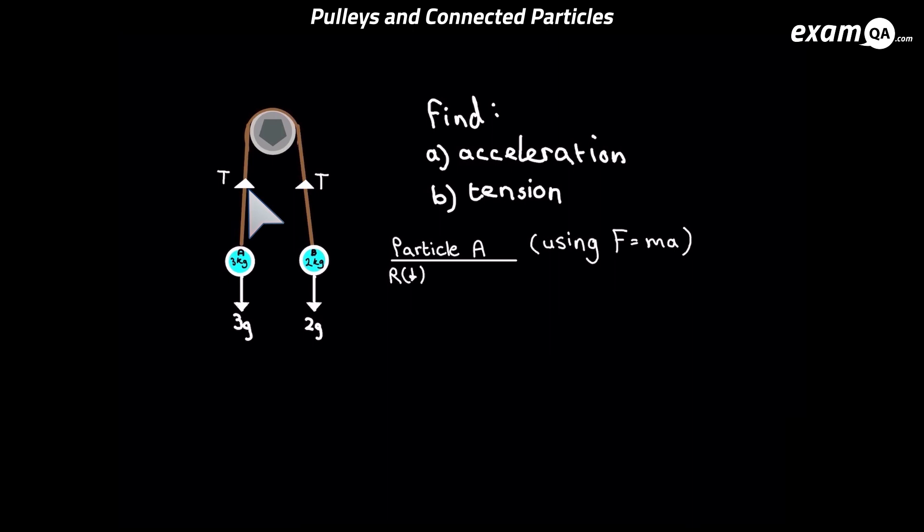You know tension's against it because had the tension not been there, it would have moved faster. The rope is not helping the particle, it's slowing it down.